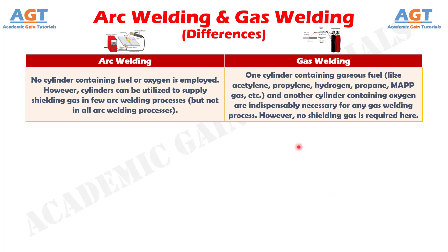Difference number 6. No cylinder containing fuel or oxygen is employed in arc welding; however, cylinders can be utilized to supply shielding gas in a few arc welding processes, but not in all. In gas welding, one cylinder containing a gaseous fuel such as acetylene, propylene, hydrogen, or propane, and another cylinder containing oxygen are indispensably necessary. However, no shielding gas is required in gas welding.